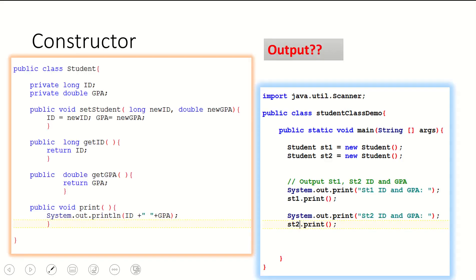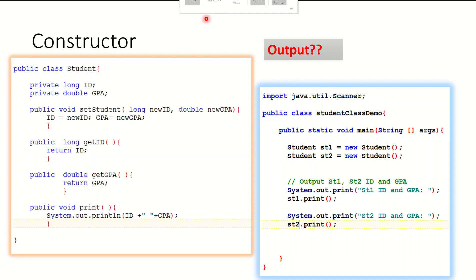We will start with this example. We will assume the following: I will have public class Student. I will have ID and GPA — they are private. I will have setStudent, which will take new ID and new GPA, save them in the private members, getID to return the ID, getGPA to return the GPA. We will also have the printing method to do the output of ID and GPA.